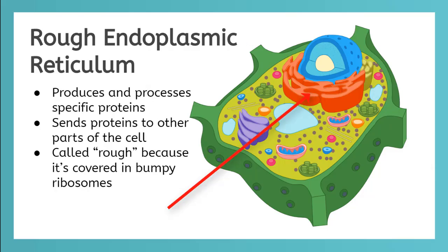The other endoplasmic reticulum is called the rough endoplasmic reticulum and it's the big red blob. It's rough because it's covered with bumpy ribosomes and these ribosomes make specific proteins that are then transported in small sacs called vesicles.